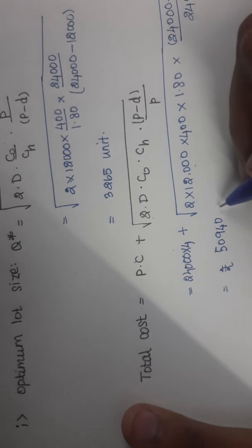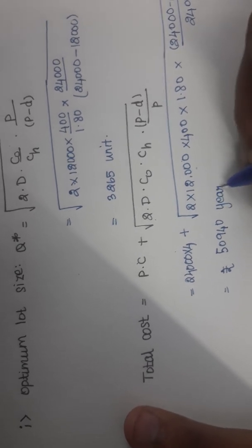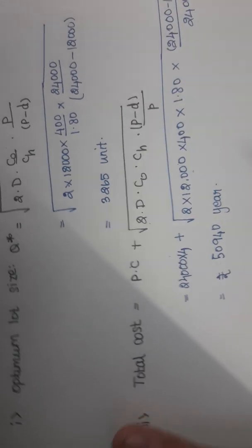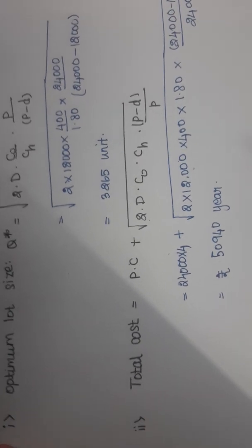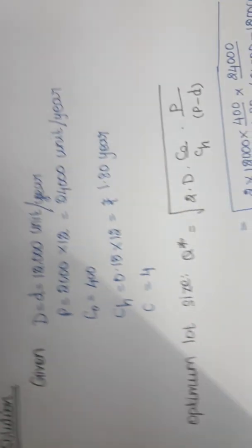The total cost per year works out to Rs 50,940 per year. Now we move on to the maximum inventory level.